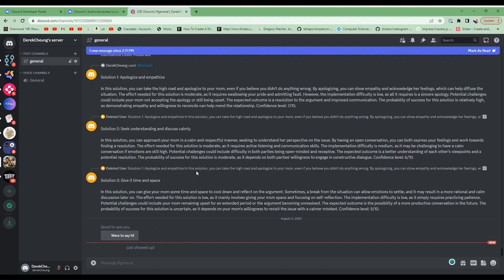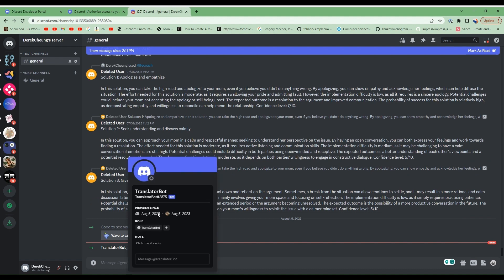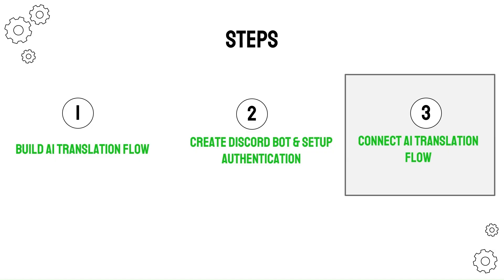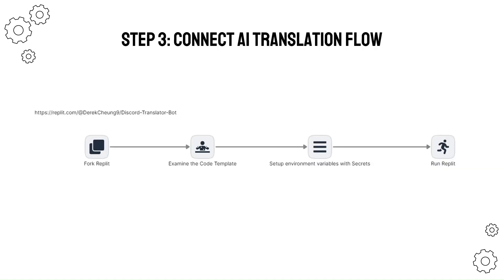I'll go to my Discord server, and you can see the translator bot has been invited, but it's currently offline. In the third and final step, we're going to connect our Discord bot to the AI translation flows. We're first going to fork a Replit that has a pre-configured template code that we can run, and then examine this code so we can use it as a starting point for any future modifications.